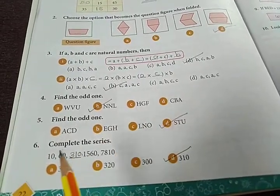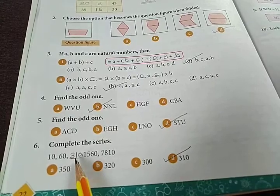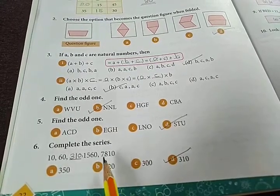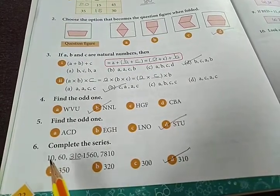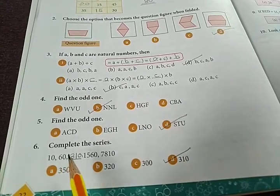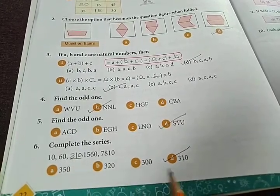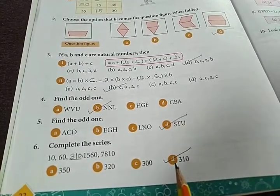Then complete the series. Here they have given 10, then comes 60, then 310. 1560, 7810. Look, 10 into 5 plus 10 equals 60. 60 into 5 equals 300 plus 10 equals 310. Therefore this is the correct answer, 310.